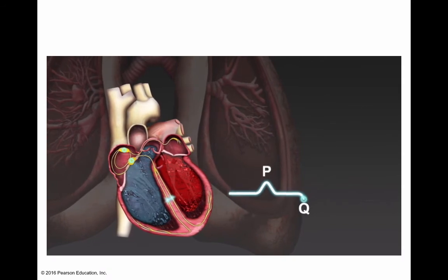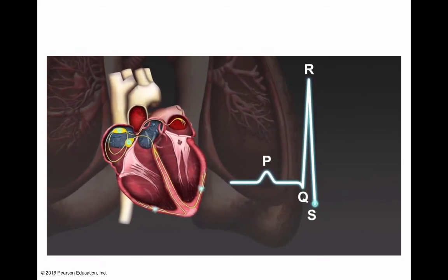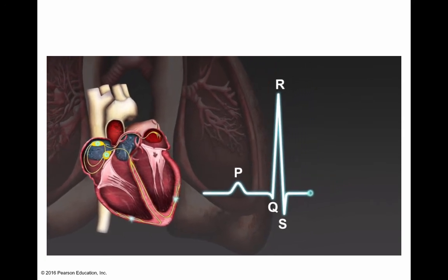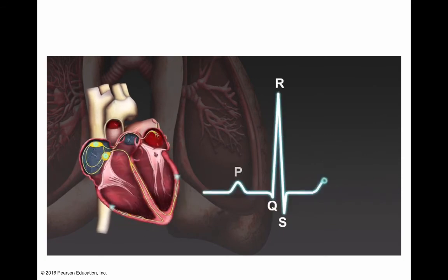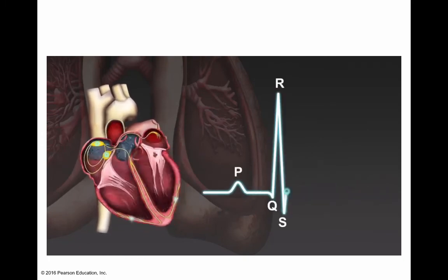The passage of the electrical signal through the ventricles produces a large spike called the QRS complex, much larger than the P wave because the ventricles are much larger than the atria. Most of the QRS complex represents depolarization of the left ventricle, which has much greater mass than the right. The impulse then remains unchanged for a moment as the ventricles stay depolarized, giving rise to a flat section called the ST segment. As the impulse fades and the ventricles repolarize, the T wave is formed.